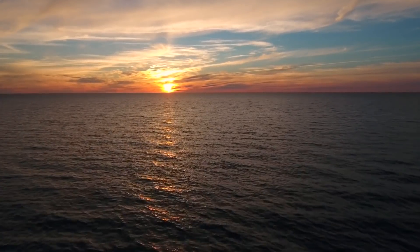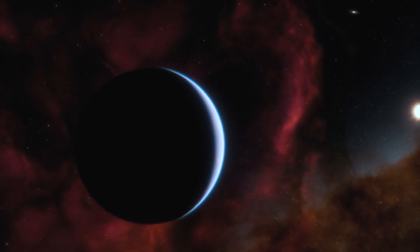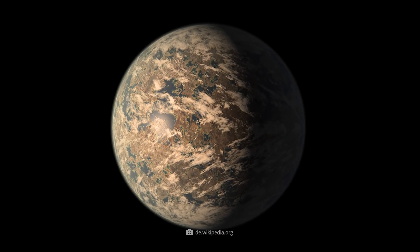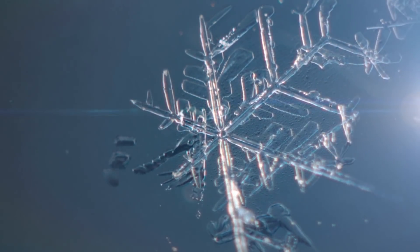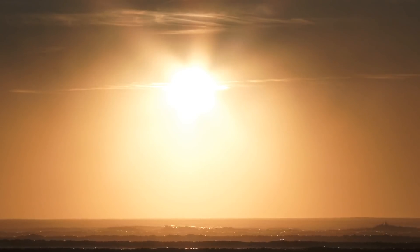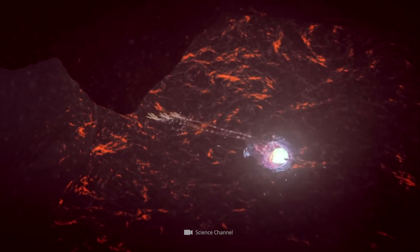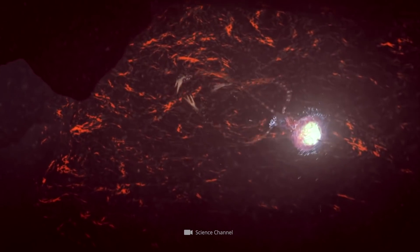TRAPPIST-1e may be covered by oceans. However, it most likely has a bound rotation, which means that it always shows the same side to its star. Thus, one half is thought to be cold and dark, and the other, warm and bright. Researchers are, of course, eager to find out soon whether organic life is possible under these conditions.